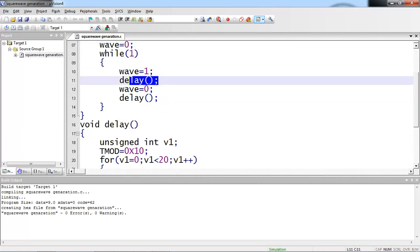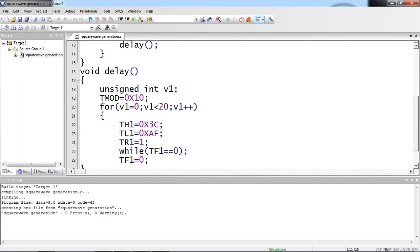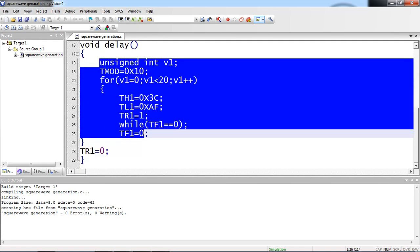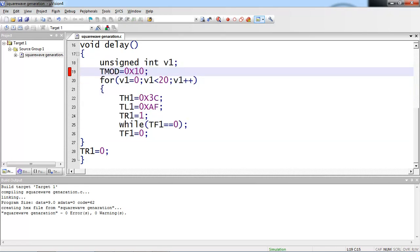The next function I am calling delay. Let us see this timer related steps in this delay function. This T-Mod is equal to 0x10. This value decides timer1 mode 1. So that you can use your timer1 with 16-bit mode. In 16-bit mode, it can count 0 to 65,535 pulses.